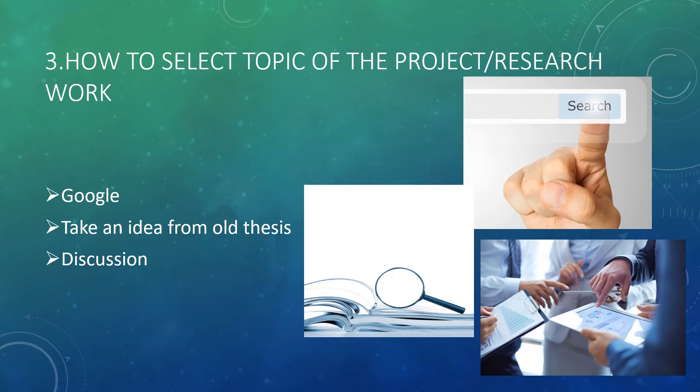How to select topic for the research work? The very first thing is Google. You can directly type a topic for the thesis of your subject. You can find a number of topics there. Second is take an idea from old thesis. This old thesis you can find from your seniors or from libraries or from the guides. Third is discussion. Discussion with your guide will improve your thinking ability. You can get an idea of your project. This will build up your knowledge as well as your confidence. Try to interact with your guide because you can solve any problem regarding the project.